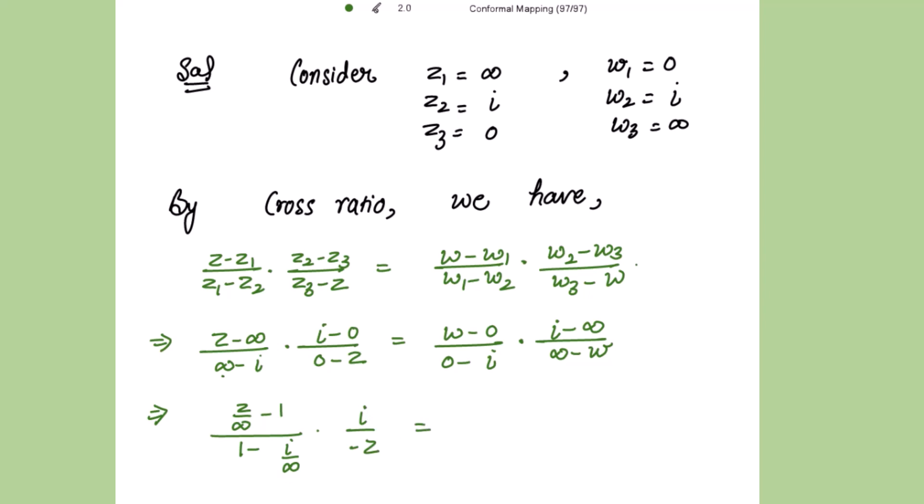Similarly, here I am also doing the same way: w over minus iota. So taking infinity common from the numerator and the denominator, I get iota over infinity minus 1 divided by 1 minus w over infinity.